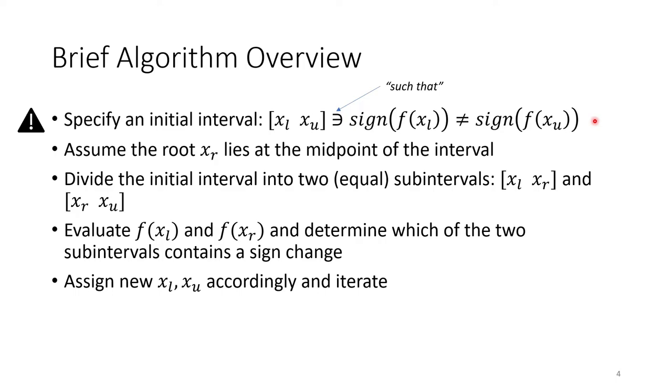Next, you assume the root is located somewhere within the interval. The interval is then halved, or bisected, and the algorithm looks for the subinterval which contains a sign change. Within this subinterval, you reassign xl and xu accordingly and iterate until you converge on the root. Let's take a look at bisection visually.